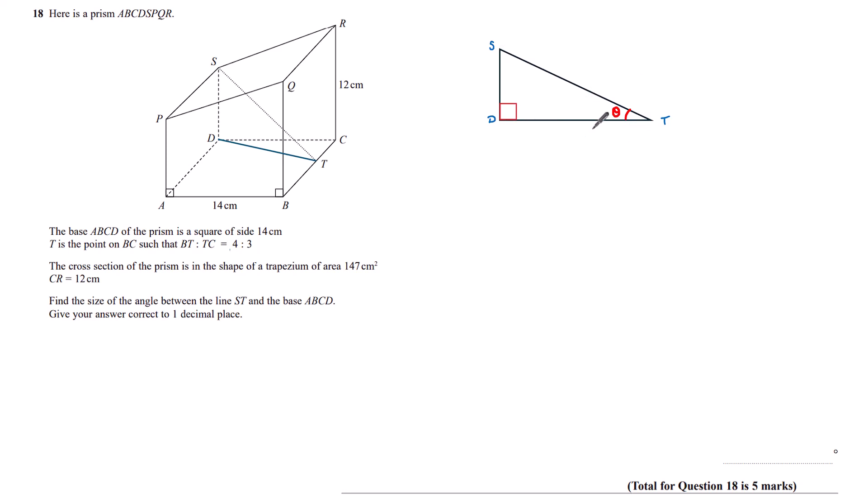We've got the triangle SDT. It's a right angle triangle and it is this value of theta that I want to find. So ideally, I need to find some lengths here. Looking at this, none of these lengths are labelled.